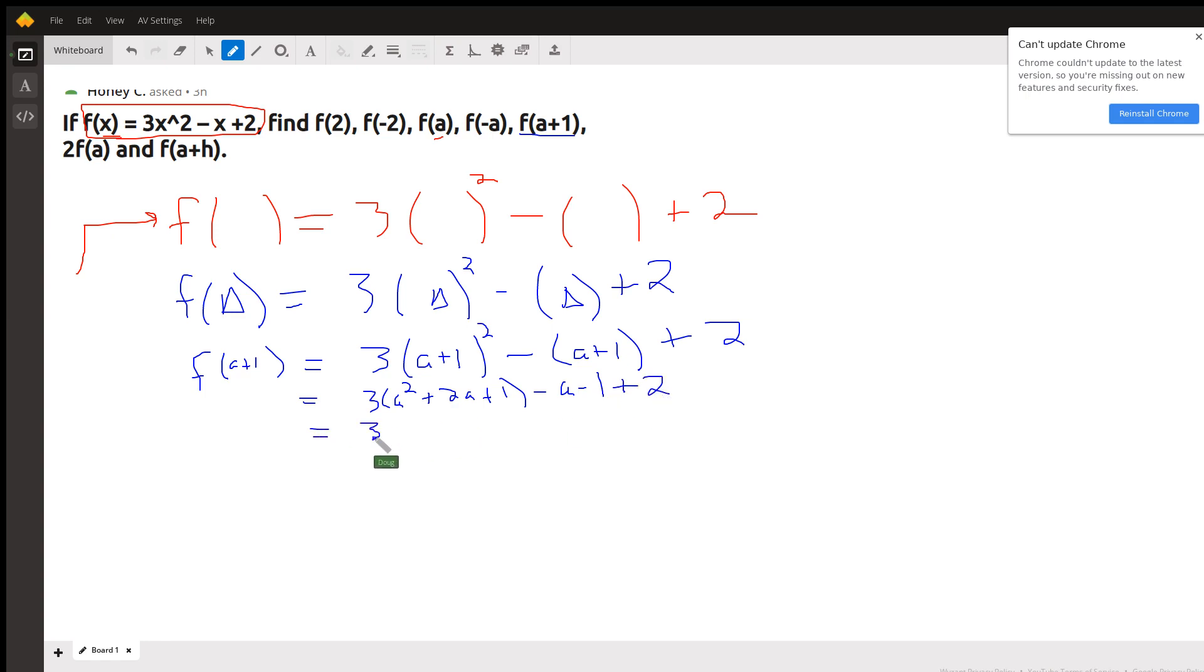Remove the parentheses here. Distribute. And here the minus 1 and the 2 combine to plus 1. And then when you're getting ready to simplify this even further, lightly cross out the ones that you've used. It's my suggestion.